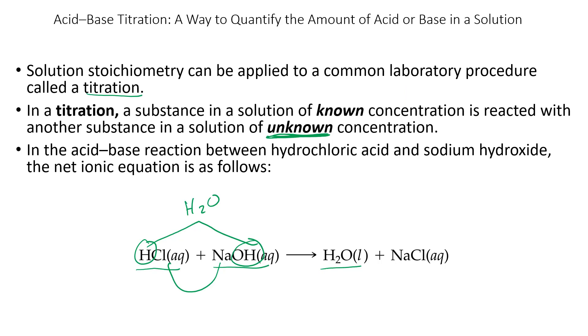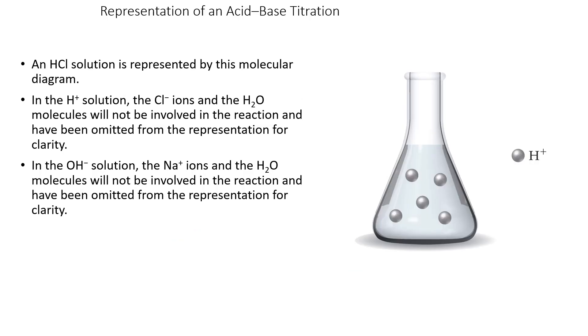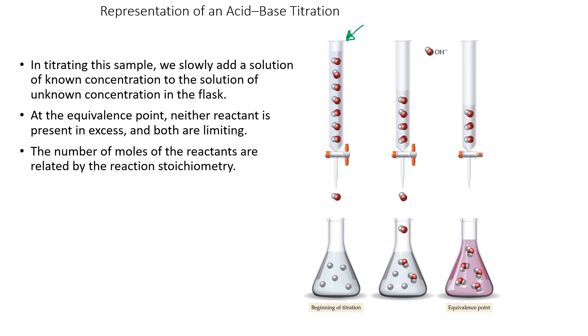We're going to look at an acid-base titration representation. The acid is put into the flask, and it's only showing the H+ because it doesn't want to clutter it up, but in there is also the chloride ions and the water molecules. In the hydroxide solution, the sodium ions and the water molecules have been removed as well for clarity. We have the NaOH in the burette, and it's just showing the OH- in the burette. Then in the flask is the H+, and as the OH- is added to the flask, the OH- reacts with the hydrogen ions and produces the H2O molecules.